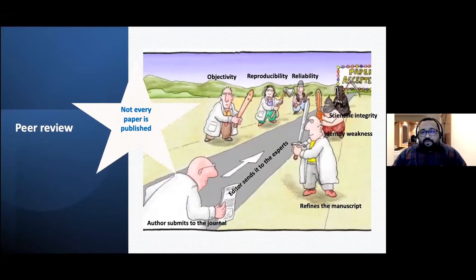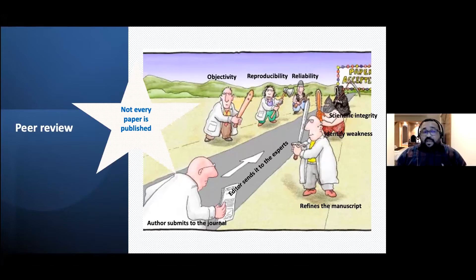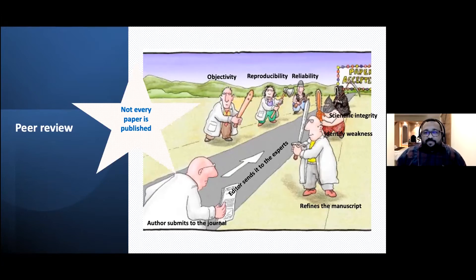We all heard about peer review this morning. A peer review, in simple words, is the critical scrutiny of a research paper submitted to a journal by a subject matter expert, which refines the manuscript, enhances objectivity, reproducibility, reliability, and scientific integrity, and identifies weaknesses and limitations. Peer review is one of the backbones of scholarly publishing — scholarly publishing doesn't exist without peer review.